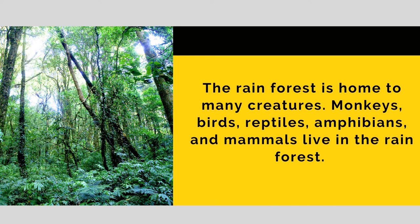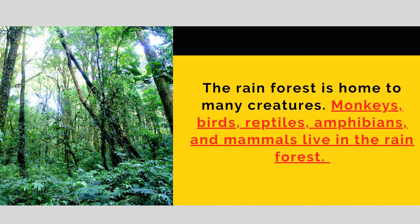Let us have this example. The rain forest is home to many creatures. Monkeys, birds, reptiles, amphibians, and mammals live in the rain forest. What is the general statement in this example? The rain forest is home to many creatures — this is the general statement that expresses the main idea of the given paragraph. This claim needs to be proven. So, what is the text evidence that supports the claim? Monkeys, birds, reptiles, amphibians, and mammals live in the forest. This sentence is the text evidence that supports the claim. It uses specific examples like monkeys, birds, reptiles, and others to make the claim of the general statement valid.